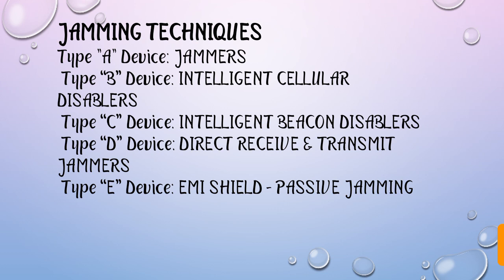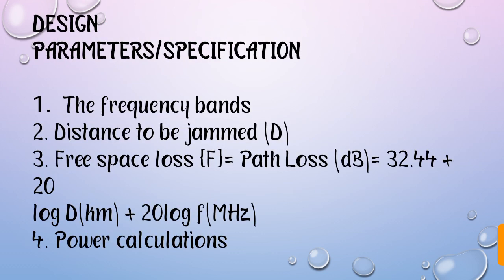Now, Design Parameter Specification. First is the frequency bands. Second is distance — the distance to be jammed. Third is free space loss F, which is equal to path loss (dB), given by the formula: 32.44 plus 20 log D (where D is in kilometers) plus 20 log F (in megahertz). Fourth is power calculation.